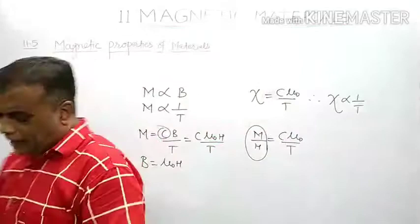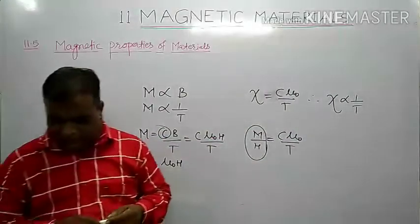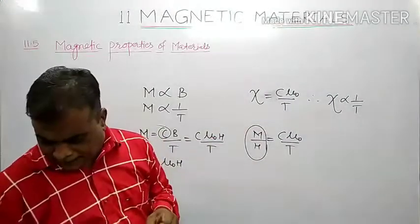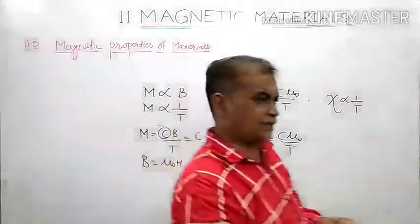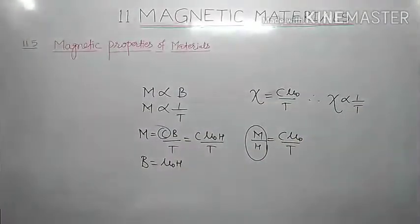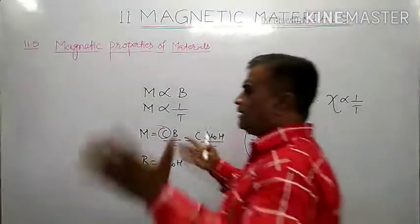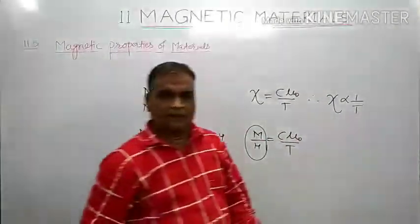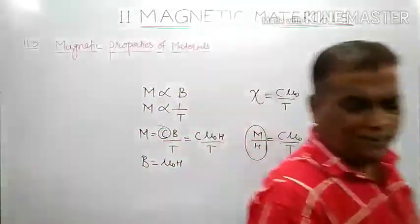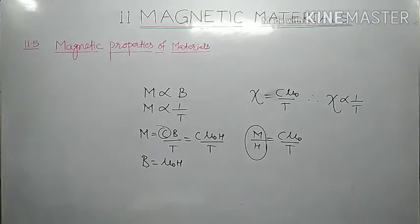This is all about paramagnetic material that we have discussed today. In the next period, we will discuss ferromagnetic material separately and then compare diamagnetic, paramagnetic, and ferromagnetic substances.